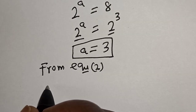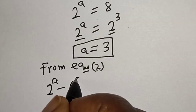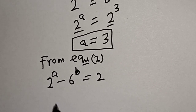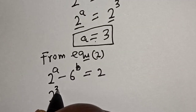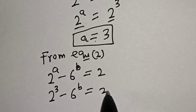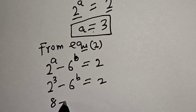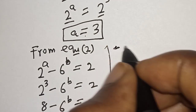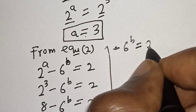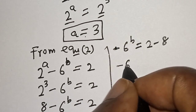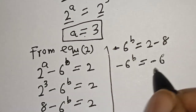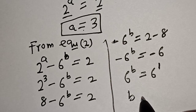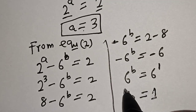From equation 2, we have 2 raised to power a minus 6 raised to power b equals 2. Substituting a equals 3, we get 2 raised to power 3 is 8, minus 6 to the power of b equals 2. So minus 6 to the power of b equals 2 minus 8, which gives 6 to the power of b equals 6, which equals 6 raised to power 1. Therefore b is equal to 1.